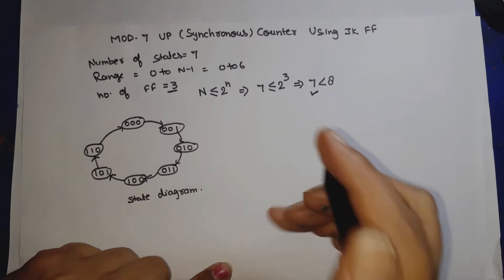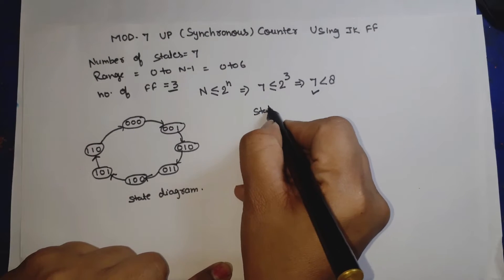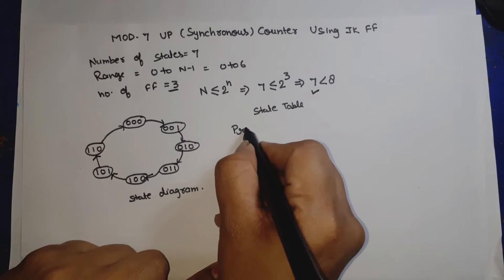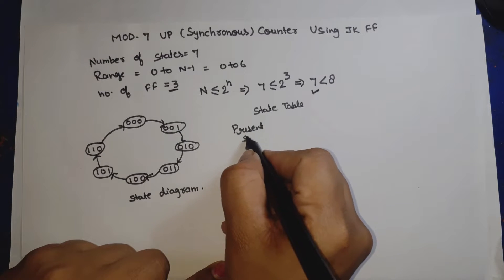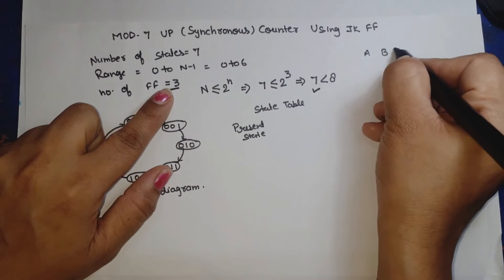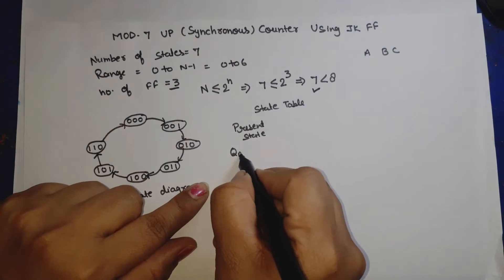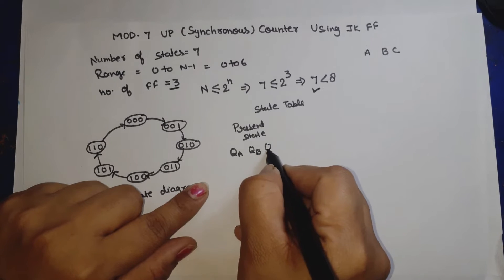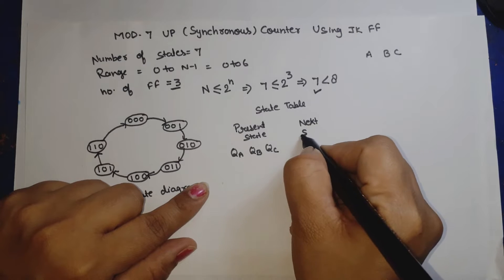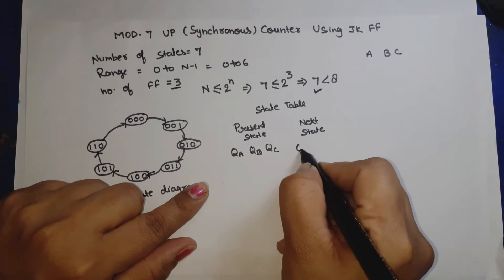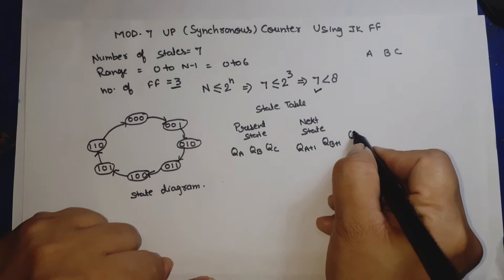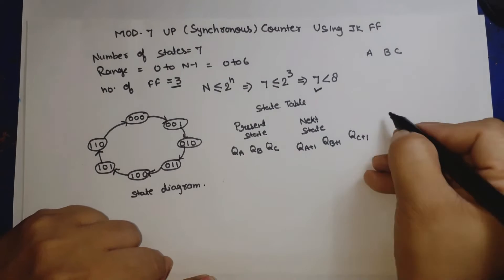Now we draw the state table. The present state has three flip-flops: QA, QB, and QC. The next state is defined by QA+1, QB+1, and QC+1.